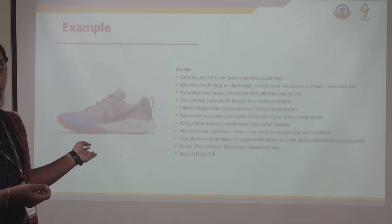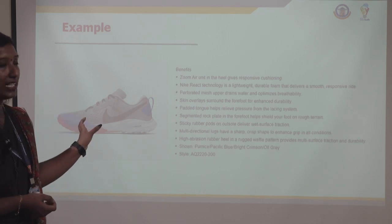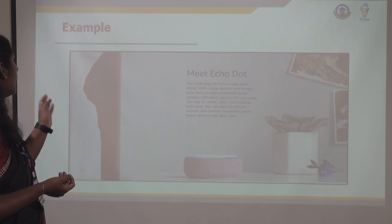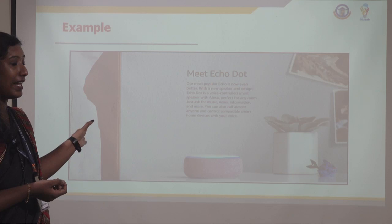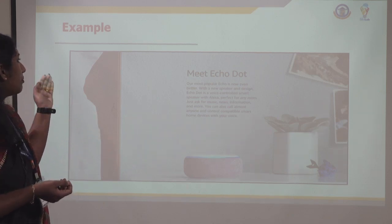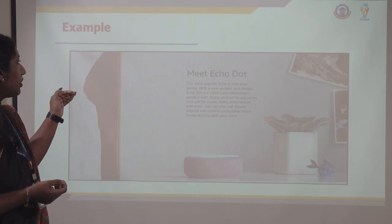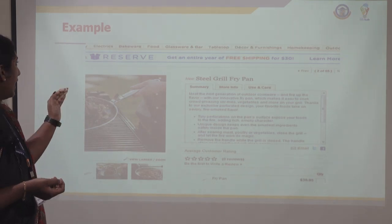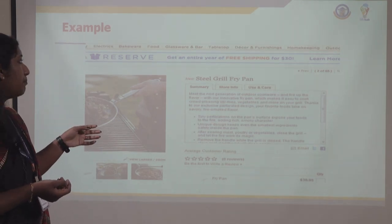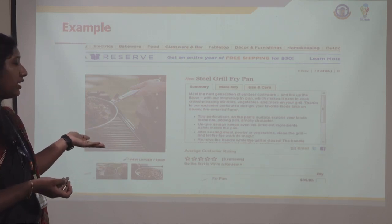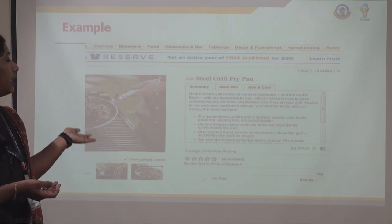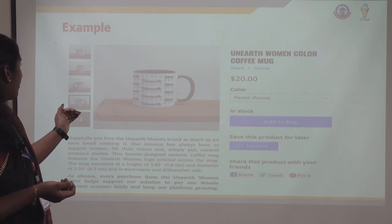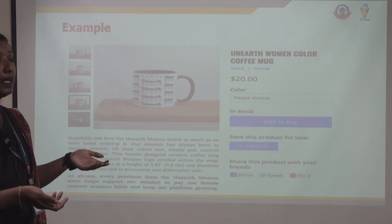Here are some examples. The first is a Puma shoe — they have given just single lines but explain everything about the shoe. Next is the Echo Dot, which is very similar to Alexa. They have given a beautiful picture that grabs attention and limited words that explain how it is created. Then there is a steel grill fry pan — a very short and simple description, and after looking at the picture you can read it with a lot of interest. Finally, an Unearthed woman-colour coffee mug, where all dimensions are given along with a very sweet and short description.